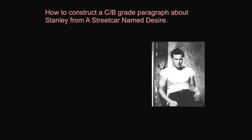So today I'm going to show you how to construct a C to B grade paragraph about Stanley from A Streetcar Named Desire and how his character is presented in the play. I'm going to start off with one of our key phrases from the wall, which is 'the way that Stanley,' and I'm going to choose to talk about the way that Stanley wears his clothes, because I think that's quite interesting and we've talked about that quite a lot.